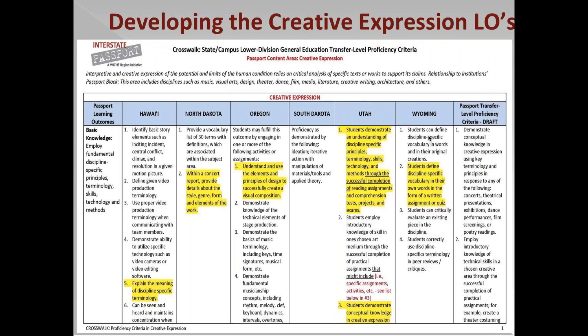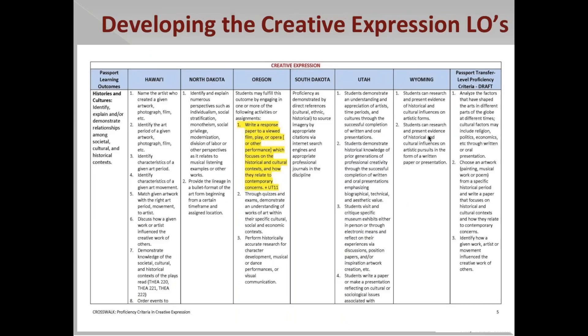What you see on the screen is an example of the crosswalk that WICHE put together. This began with interstate meetings in each of the seven states, where we agreed on important learning outcomes and proficiency criteria. The crosswalk shows a column for each state — Hawaii, North Dakota, and so on — and the highlighted sections indicate where there was consensus across states about either learning outcomes or proficiency criteria. We looked for common agreement across states and began developing both the PLOs and PCs based on that.